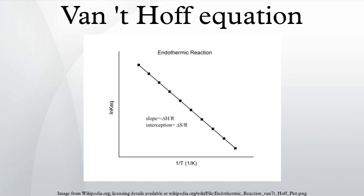For a reversible reaction, the equilibrium constant can be measured at a variety of temperatures. This data can be plotted on a graph with ln K on the y-axis and 1/T on the x-axis. The data should have a linear relationship, the equation for which can be found by fitting the data using the linear form of the Van't Hoff equation. This graph is called the Van't Hoff plot and is widely used to estimate the enthalpy and entropy of a chemical reaction. The slope and intercept are obtained from the linear fit.